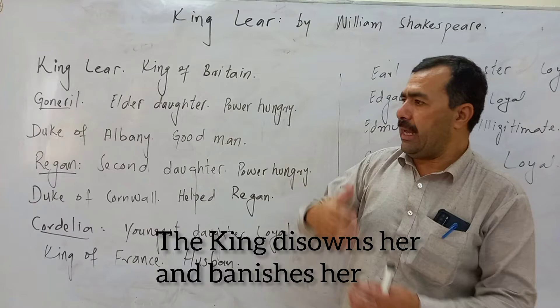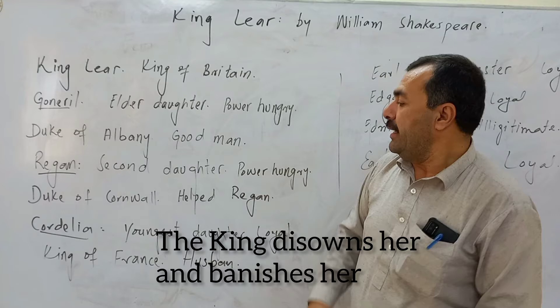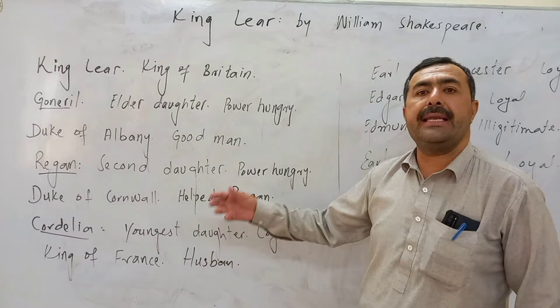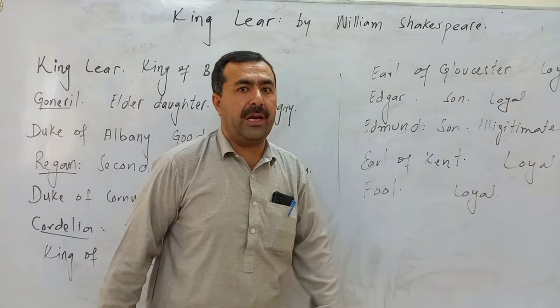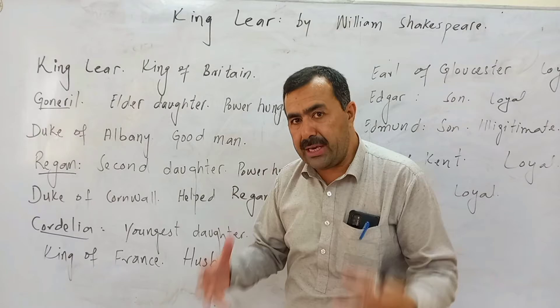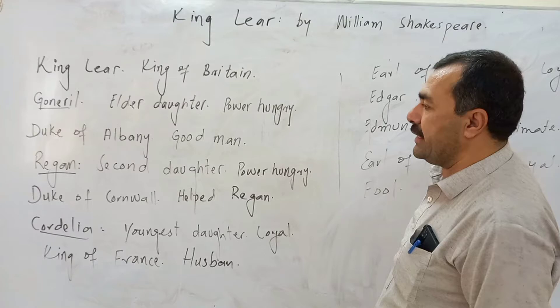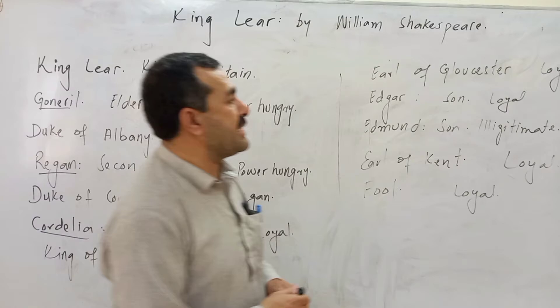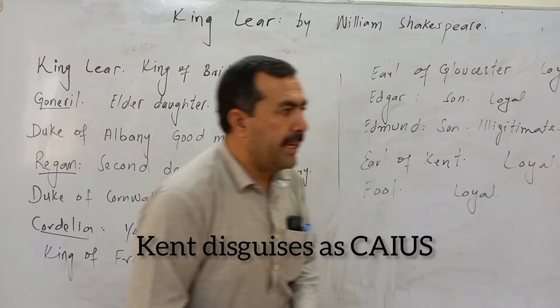When the King of France saw this, he was totally impressed by the conduct of Cordelia. So he proposed to her, she accepted, and they got married. At this time, Kent — who was very loyal and was at the court — told the king: do not do such a thing, she is actually your loyal daughter. The king once again became very angry and he also banishes Kent from the kingdom. Kent, however, wanted to help the king, so he disguises himself as a servant.